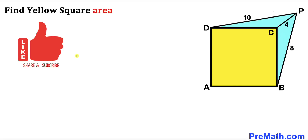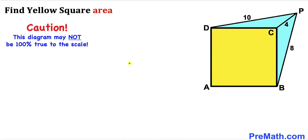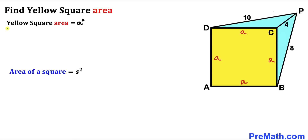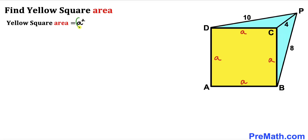Please don't forget to give a thumbs up and subscribe, and please keep in mind that this figure may not be 100% true to scale. Let's get started. Our very first step: let's assume that the side length of this square is lowercase a. Since all the sides are the same, all sides are lowercase a. The area of a square is s², where s represents the side length, so the yellow square area is going to be a². Our task is to find the value of a².